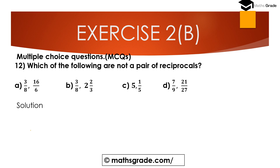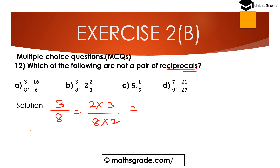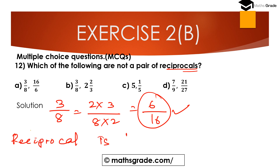Question number 12: which of the following are not a pair of reciprocals? The reciprocal of a fraction is 1 divided by that fraction. For option A: 3/8 and 16/6. The equivalent fraction of 3/8 is 2 multiplied with 3 over 8 multiplied with 2, which gives 6/16. The reciprocal of 6/16 is 16/6, which matches. So 3/8 and 16/6 are reciprocals.